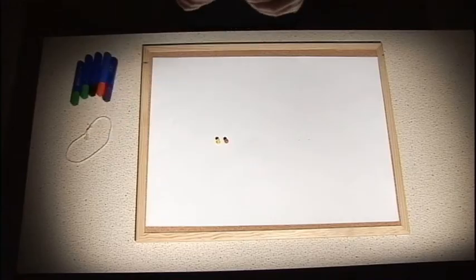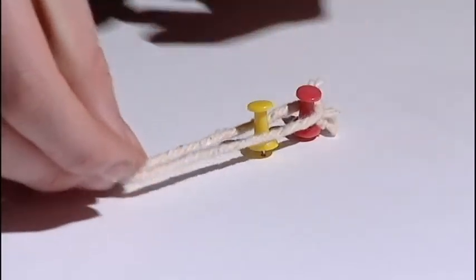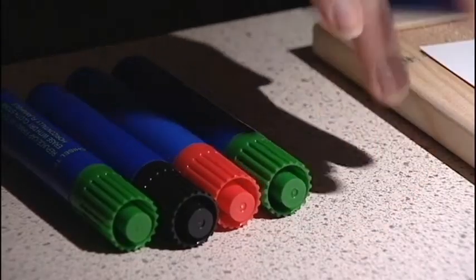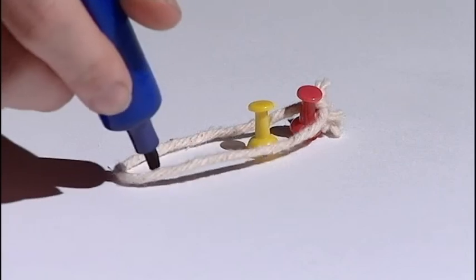Tie a piece of string into a small loop and place the loop over the two pins. Insert a pen into the loop of string and pull it taut.